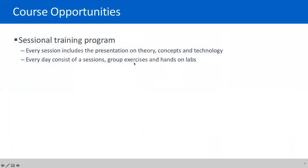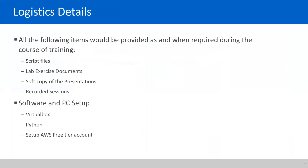Every session will have theory, practical concepts, hands-on exercises, and training artifacts like script files and lab exercises - most of it in a GitHub fashion. I'm assuming you don't know GitHub, so we'll do that today as well to prepare for what's next. Software and PC setup: we need VirtualBox, Python, and an Amazon free tier account.